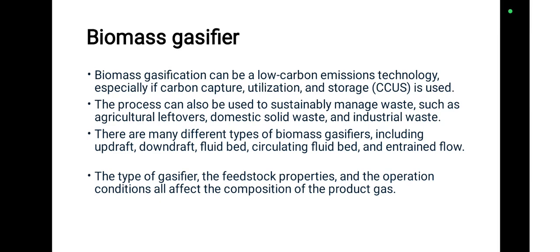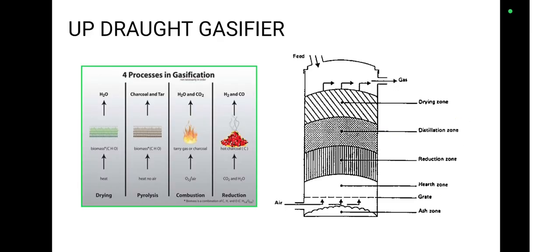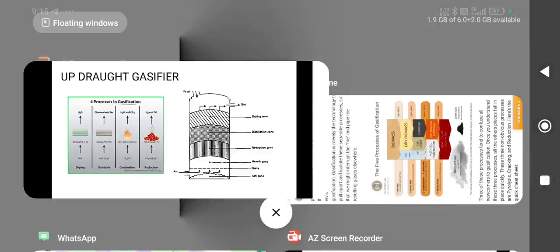Now we are going to see the different types of biomass gasifiers. The first type is updraft gasifier. Before we discuss the gasifier, first we should know what are all the basic processes involved in the gasification process. I am going to explain the concept with the help of this diagram.